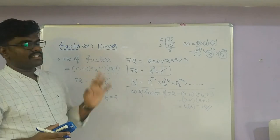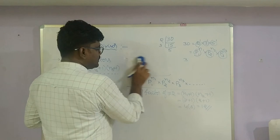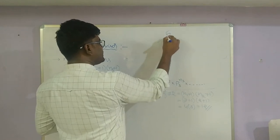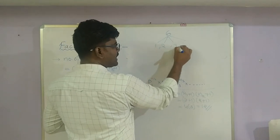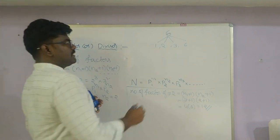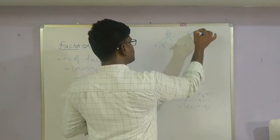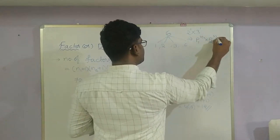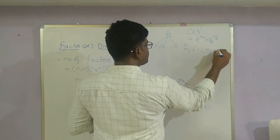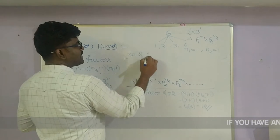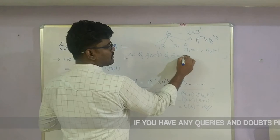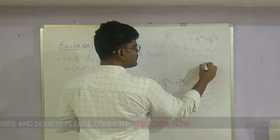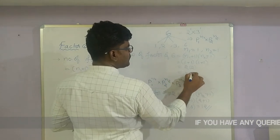Let's verify with 6. We know the factors of 6 are 1, 2, 3, 6 — that is 4 factors. The prime factorization of 6 is 2 × 3 = 2^1 × 3^1, so it is in the form p1^n1 × p2^n2 where n1 = 1 and n2 = 1. Number of factors = (1 + 1) × (1 + 1) = 2 × 2 = 4. Correct — 4 factors.